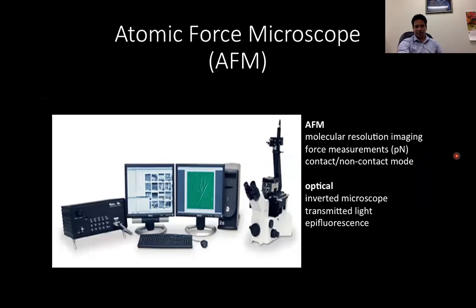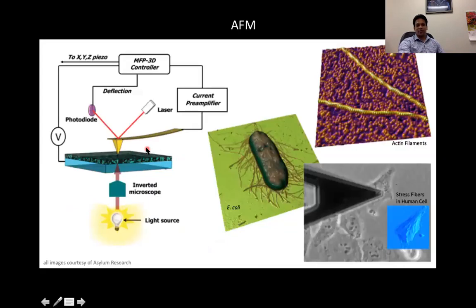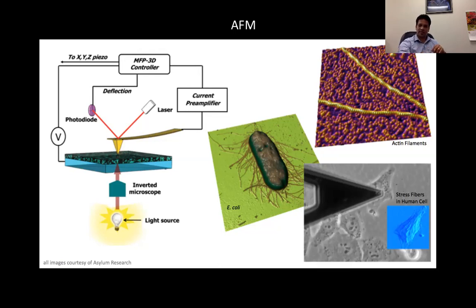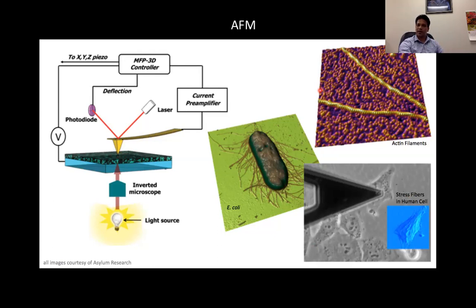There is another technique called atomic force microscopy — a different tool altogether. It enables molecular-resolution imaging and force measurement. The way it works: there is a lever that runs over the top of the sample and interacts with the sample surface, and it can tell us the roughness of the sample and resolve it quite well. For example, here you can see stress fibers in human cells and actin filaments. It is a very good technique, especially if someone wants to look at surface roughness and do measurements. It also has tools to analyze that data.